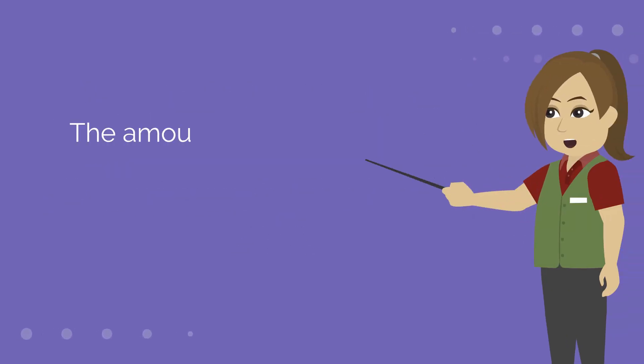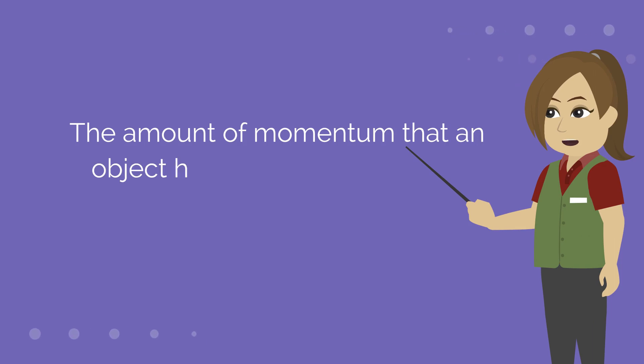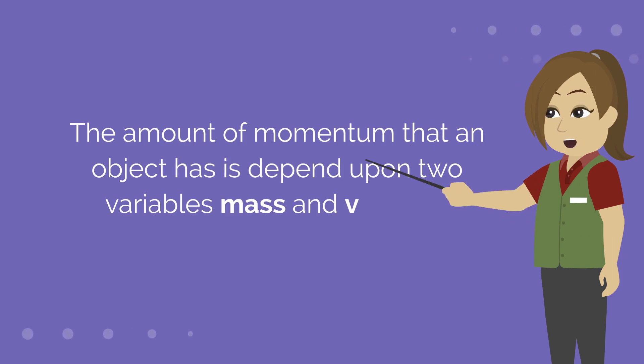The amount of momentum that an object has depends upon two variables: mass and velocity.